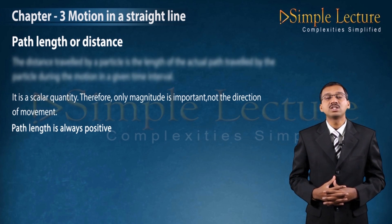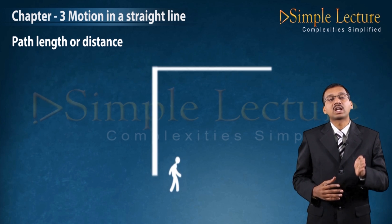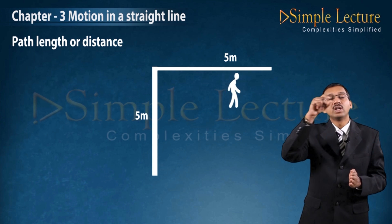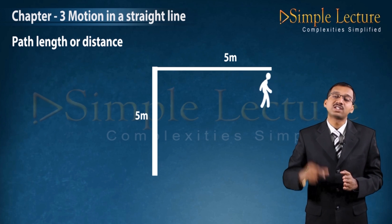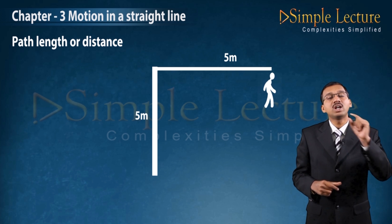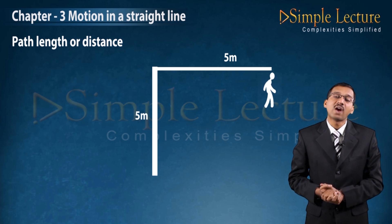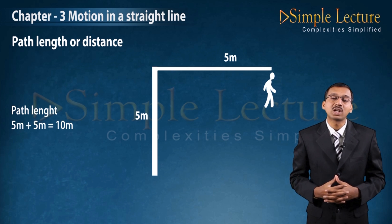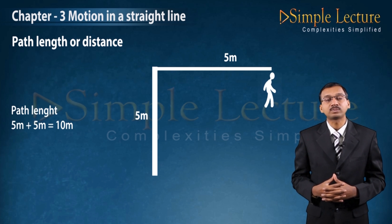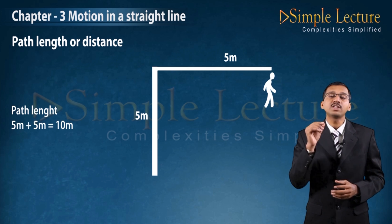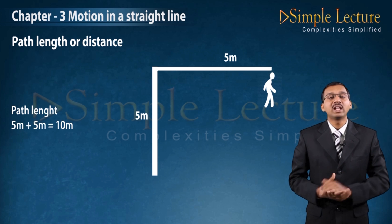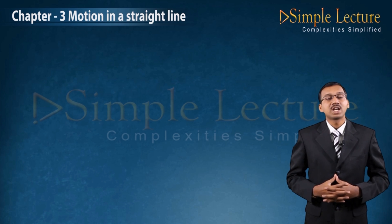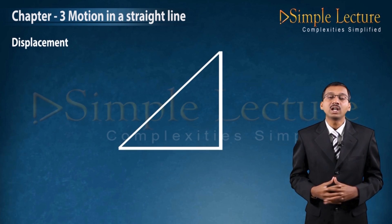For example, if we consider 5 meters moving upward and 5 meters moving to the right side, the total distance will be 5 plus 5, giving 10 meters as the total distance. That is called path length or distance. Next, moving to displacement.